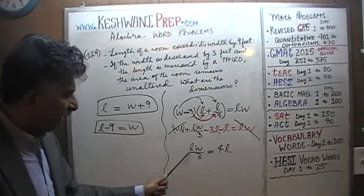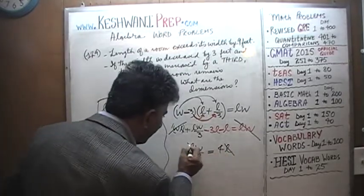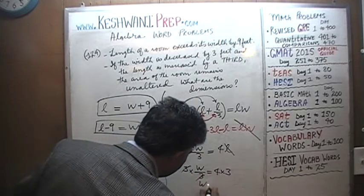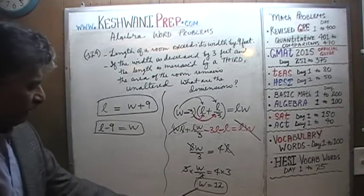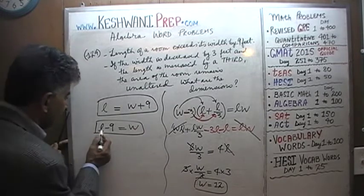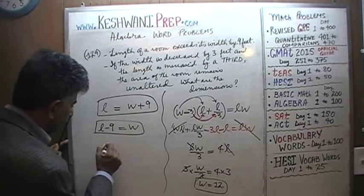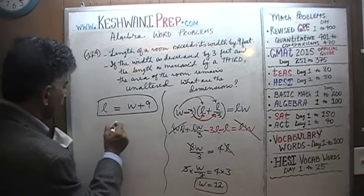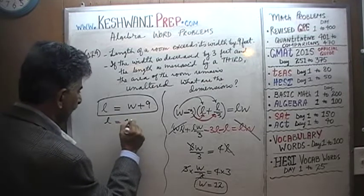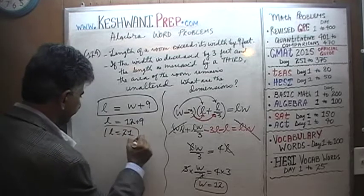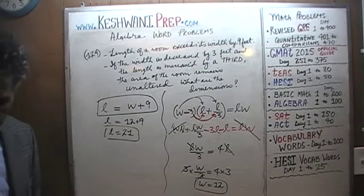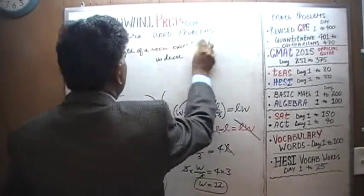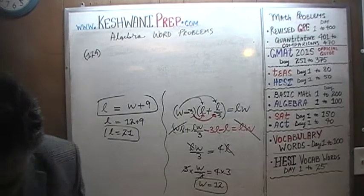Multiplying both sides by 3, W — the width — must be 12. If the width is 12, then from our first equation, the length is going to be 12 plus 9, so the length is 21. That's all — we are done. All we have to do now is verify our work. It's always a good idea to verify at the end; it only takes a few extra seconds.